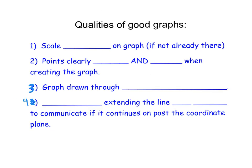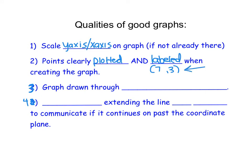There are four qualities I expect to see in all of your graphs. First, you need to scale the y-axis and x-axis on the graph if they are not already there — scale it so I know what each hash mark means. Second, your points need to be clearly plotted with dots and labeled as their xy coordinate, like '7 comma 3', with the label next to your dot.